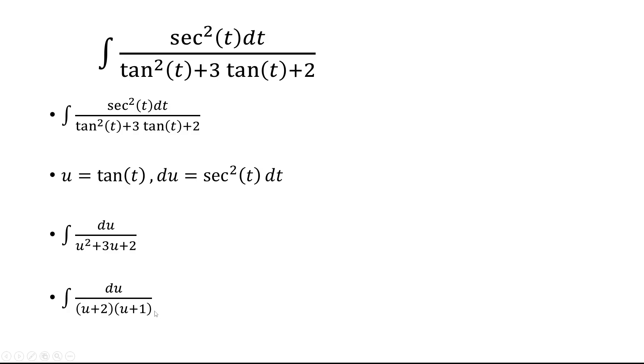Now the goal is to get this into two separate fractions. So in order to do that, you have to use partial fraction decomposition, but I'm going to skip the steps and get that 1 over u plus 2 times u plus 1 is equal to 1 over u plus 1 minus 1 over u plus 2.